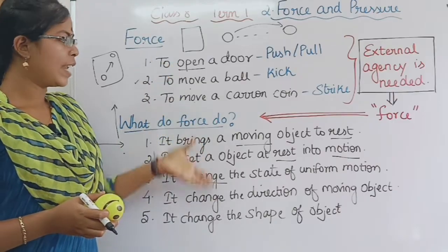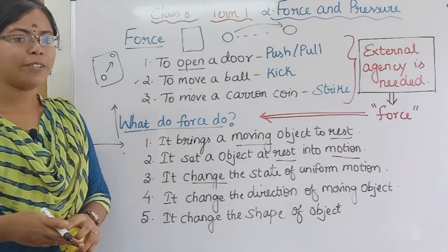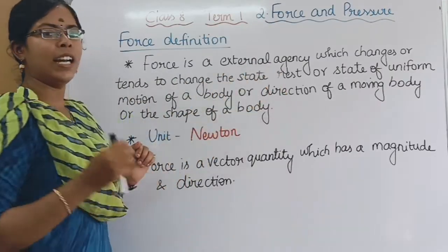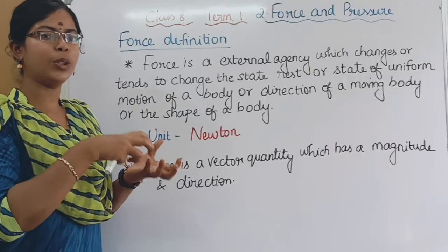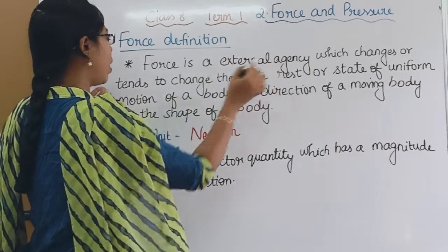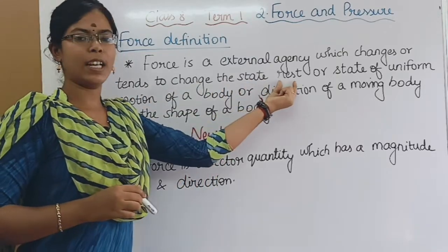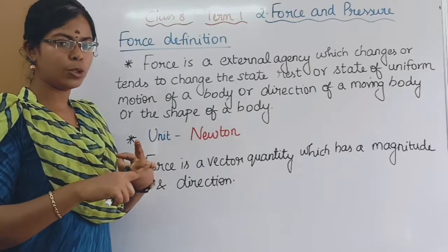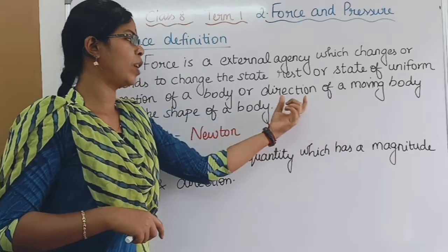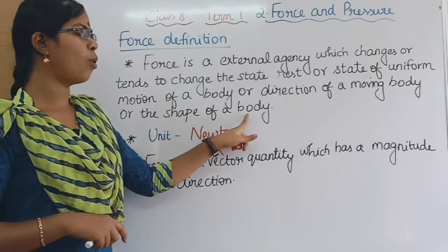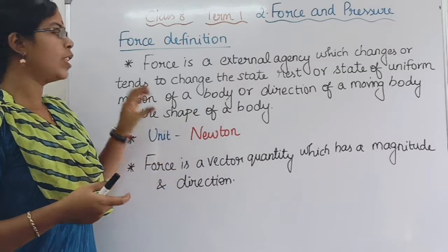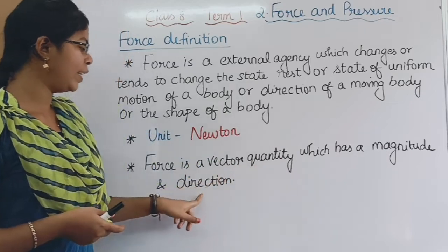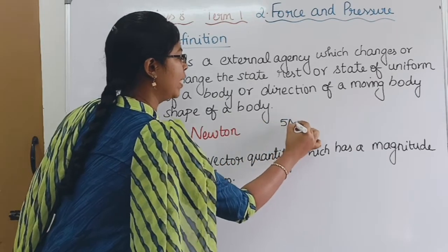Now, what do you say about force? Force is an external agency — an external object — which changes or tends to change the state of rest, or the state of uniform motion of a body, or the direction of a moving body, or the shape of a body. That is the definition of force. The unit of force is Newton. Force is a vector quantity, which has both magnitude and direction — for example, 5 Newtons in the north-west direction.